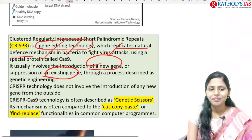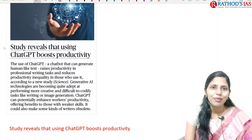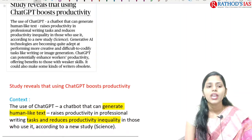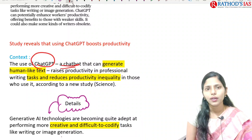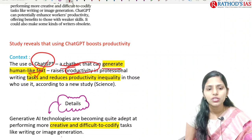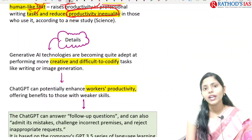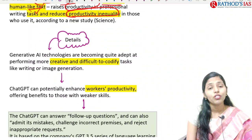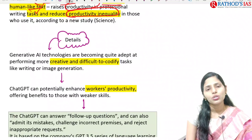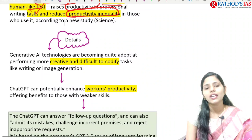A study reveals that using ChatGPT boosts productivity. ChatGPT is a chatbot that can generate human-like text and raise productivity in professional writing tasks while also reducing productivity inequality. Generative AI technologies are becoming quite adept now, and difficult-to-codify tasks like writing or image generation are being addressed. ChatGPT can enhance worker productivity, offering benefits especially to people with weaker skills.